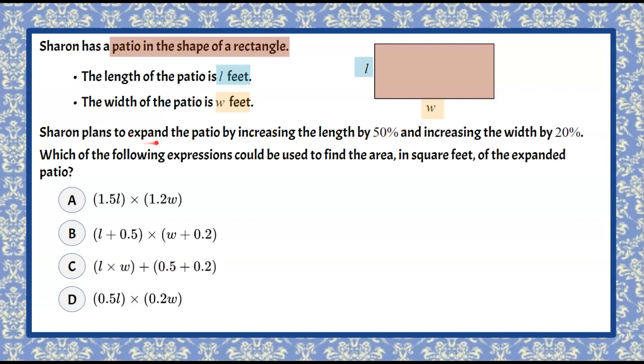So now Sharon is going to expand the patio by increasing the length by 50%. So the length is going to increase by 50%. And then she's going to increase the width by 20%. And then we have to write an algebraic expression and find which one it's equivalent to.